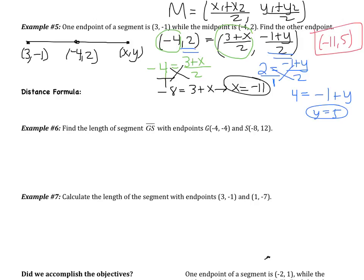That was the midpoint formula. Next we're going to do the distance formula. It looks a little worse but it's not that bad. The distance formula involves a square root. You take your x-values and subtract them, then square the result. Take your y-values, subtract them, and square that result. At the end, take the square root of everything.